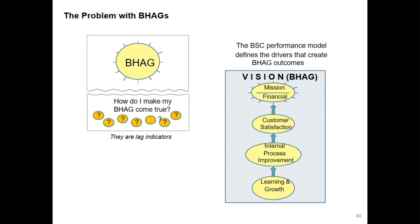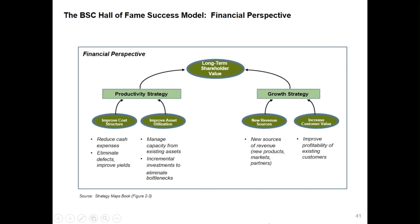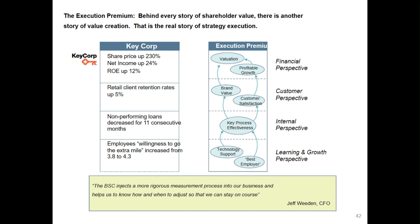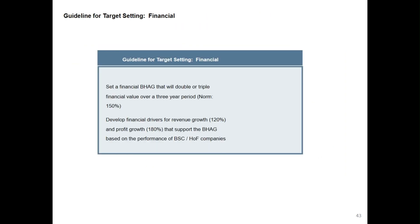Looking at the financial perspective of a Hall of Fame company and another Hall of Fame company, KeyCorp: the guideline for target setting for financial objectives is to set a financial BHAG that will double or triple financial value over a three-year period (norm: 150%), and develop financial drivers for revenue growth (120%) and profit growth (180%) that support the BHAG, based on the performance of BSC Hall of Fame companies.